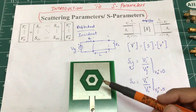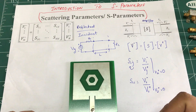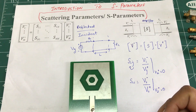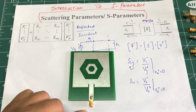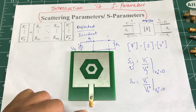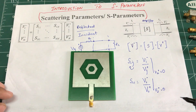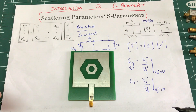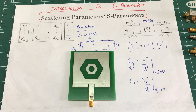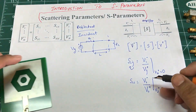When measuring S-parameters with a Vector Network Analyzer (VNA), connecting, say, an antenna to port one means port two must be properly matched. This is achieved through VNA calibration — open circuit, short circuit, and through calibration steps. When we connect a single-port device, we automatically assume the other port is matched to 50 ohms or 75 ohms, whatever the system impedance is.